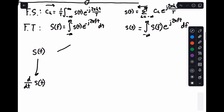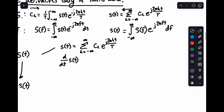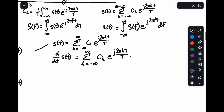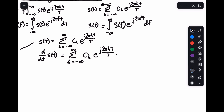If this is a periodic signal, we can say s of t equals the sum from k equals minus infinity to infinity of c sub k, e to the j two pi k t over T. So likewise, d/dt of s of t is simply equal to the sum from k equals minus infinity to infinity. Now c sub k doesn't depend on t — it's just a constant, just a coefficient — so it comes out, and we take the derivative of the exponential with respect to t: e to the j two pi k t over T, times the derivative of the inside, which is j two pi k over T, using the chain rule.